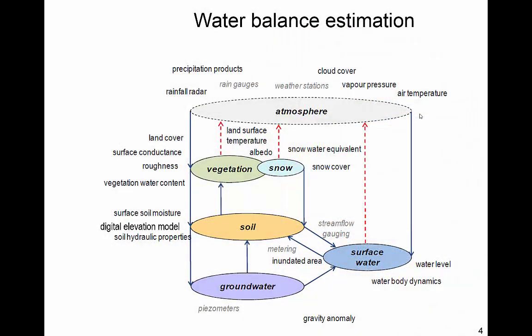A lot of applications of remote sensing in hydrology rely on their combination with a water balance model, because while we can measure a lot about the water cycle, there's also a lot we can't measure and we have to model. So typically we use them in a data assimilation or calibration context, and then use a model to integrate them. This diagram aims to show some of the types of things we can observe with remote sensing that help us improve our estimates of the water balance.